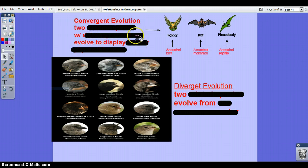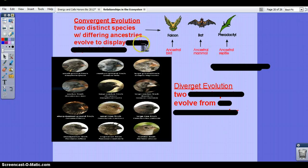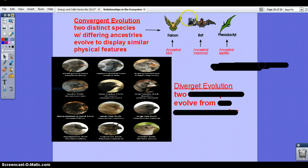Convergent evolution, remember when we did plate boundaries? Basically you have two distinctive species, and this example is a pterodactyl and a falcon, and they come from different ancestries, but eventually they're going to display similar features in one organism, so they kind of go from two to one in a sense.